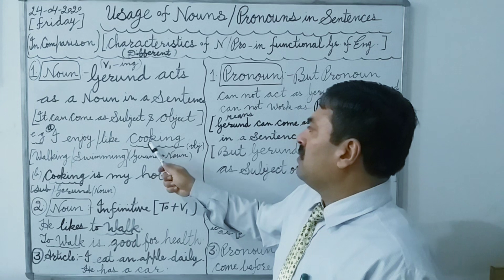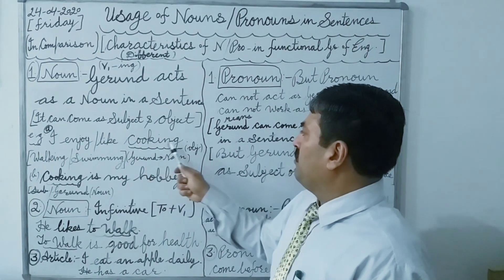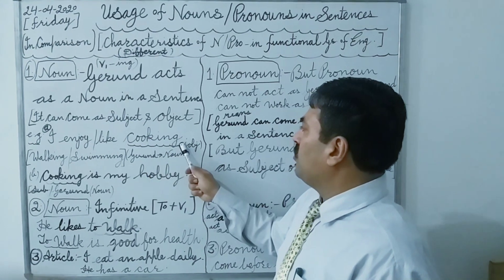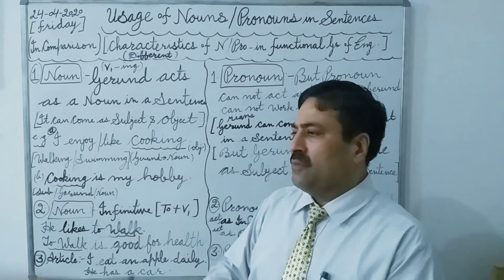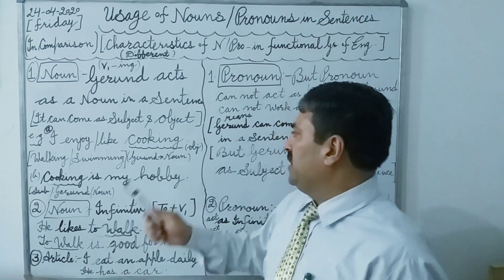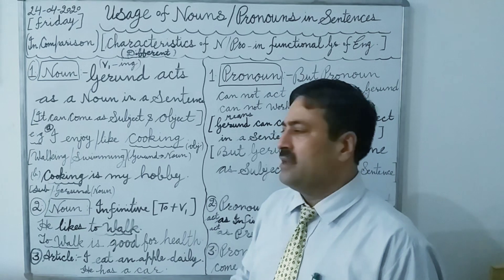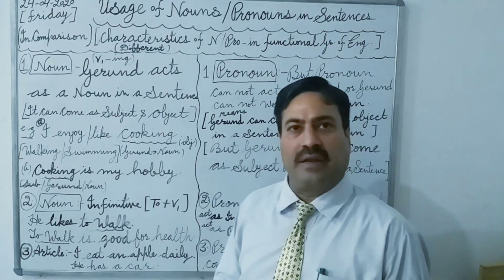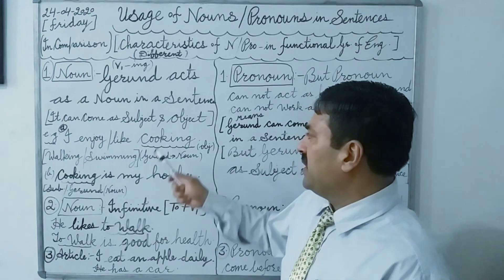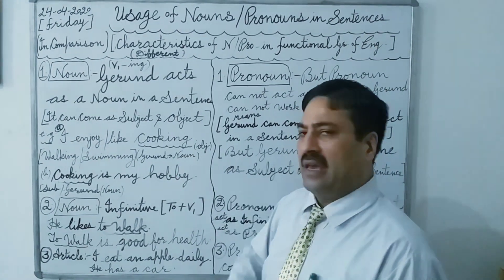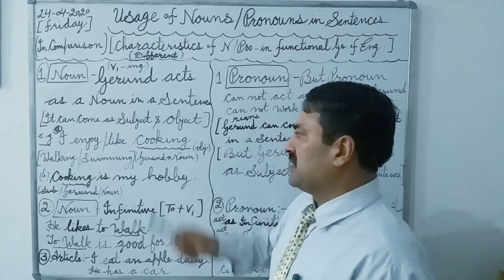Here, cook plus -ing — the full spelling will be 'cooking,' meaning pakaana, kisi chij ko banana. This is a gerund here, but it is working as an object of the sentence.